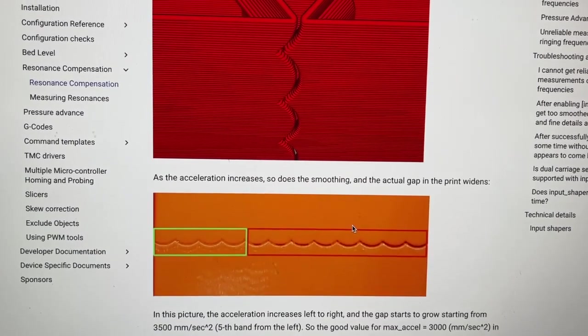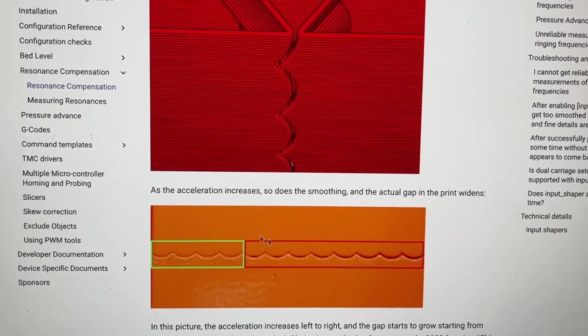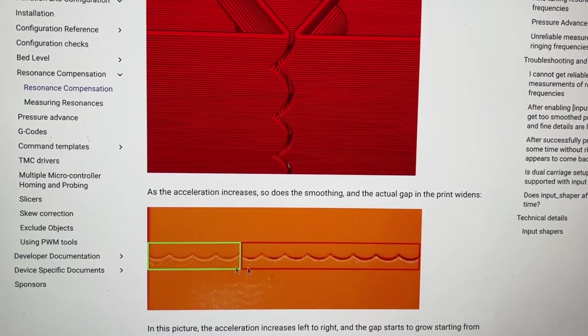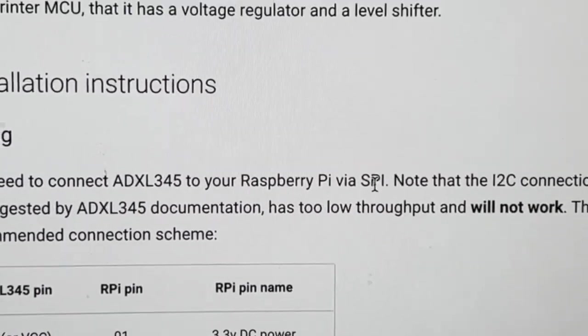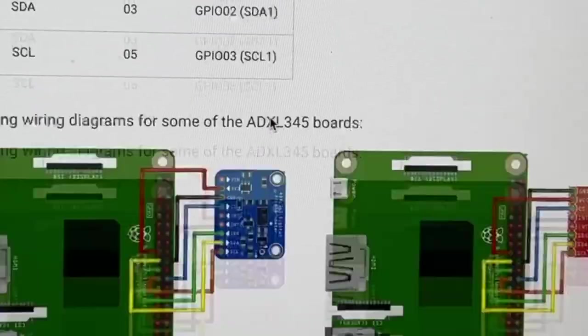I also want to understand the trade-offs between acceleration and smoothing which is spelled out here. So as acceleration increases so too smoothing and the actual gap in the print lines and you can kind of understand how that might impact your print.